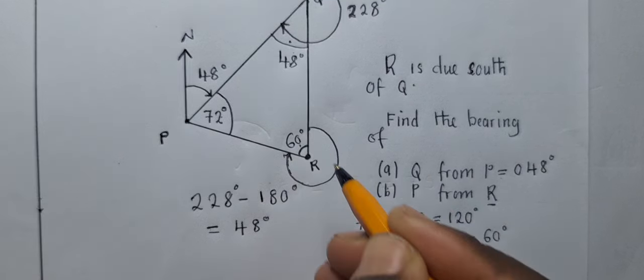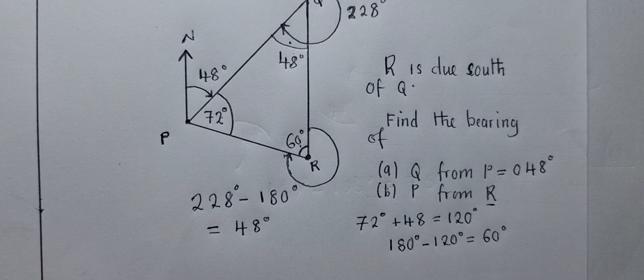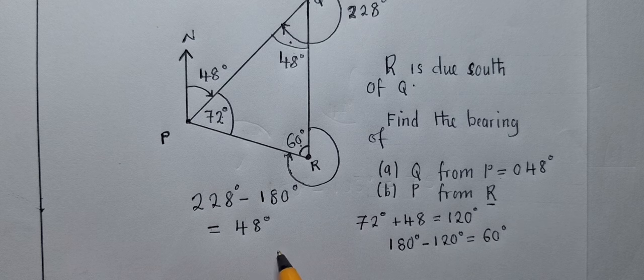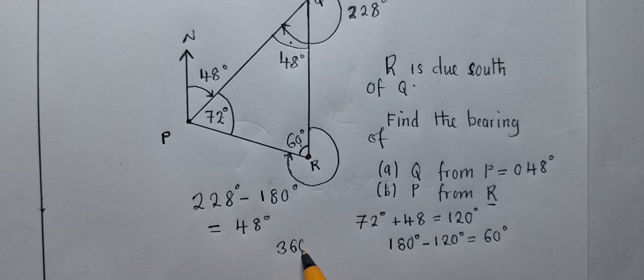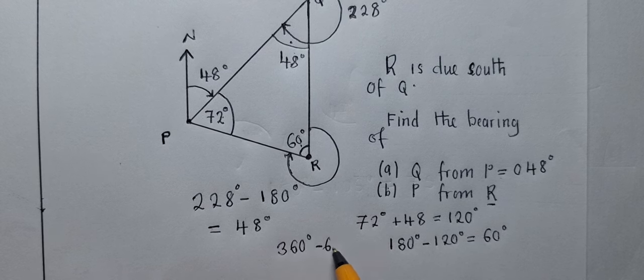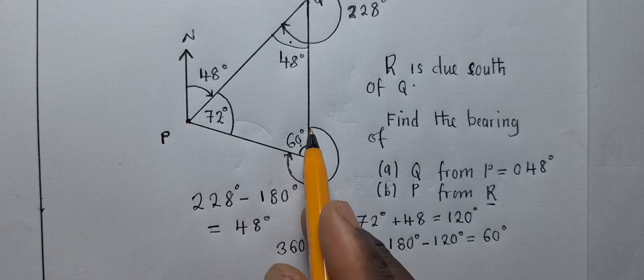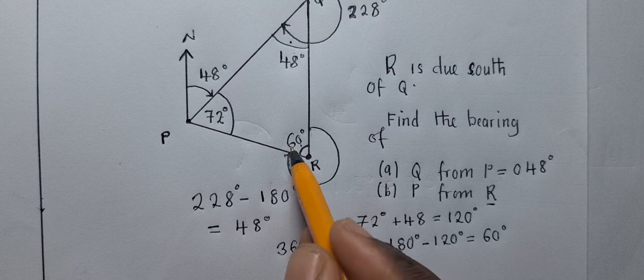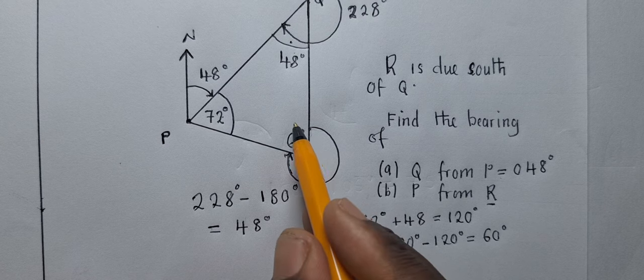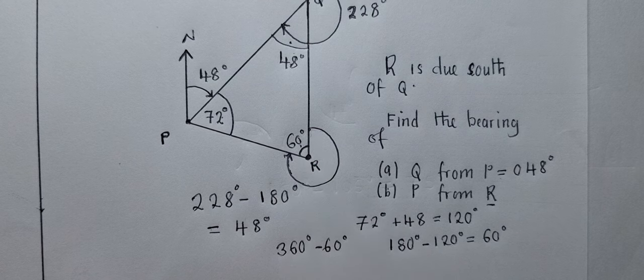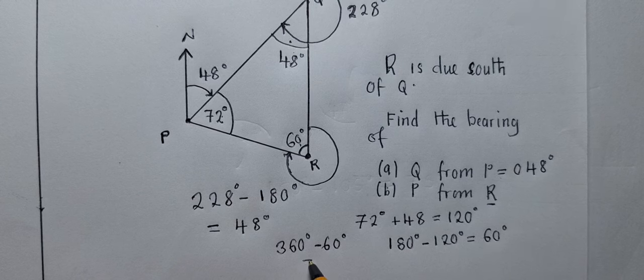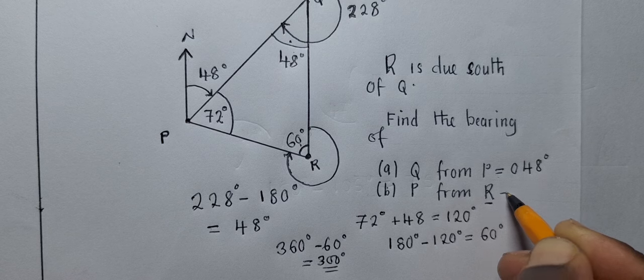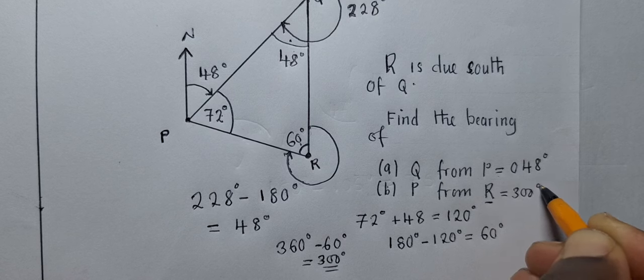So the angle inside here is 60 degrees. So now to find the bearing we're looking for, we're going to say 360 degrees minus 60 degrees. So 360 is the property of a circle. So assume this is a circle. And then from the circle, we just remove 60 degrees. So this will just give us 300 degrees. So our answer here is 300 degrees.